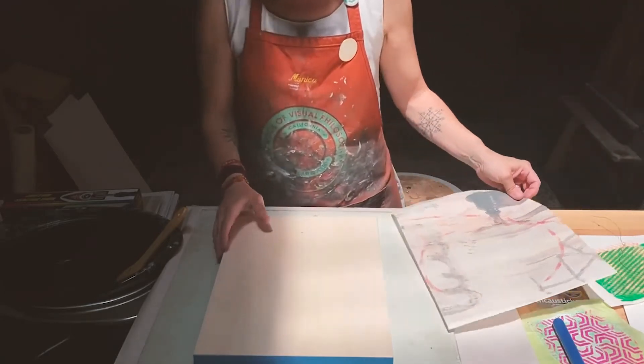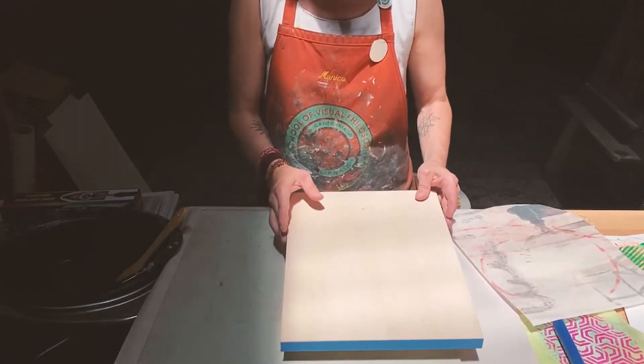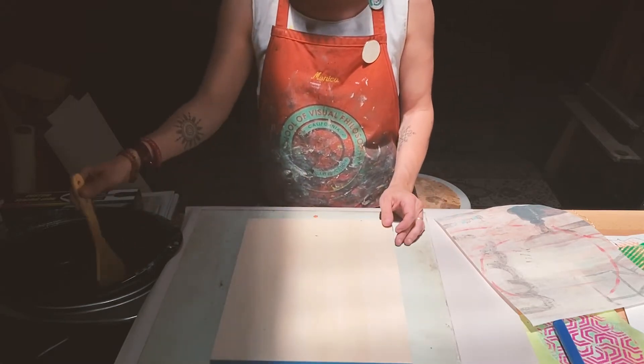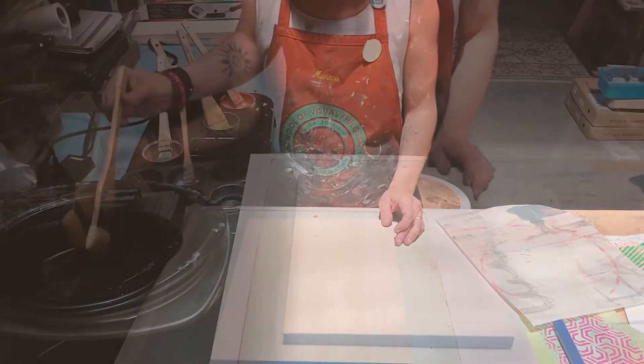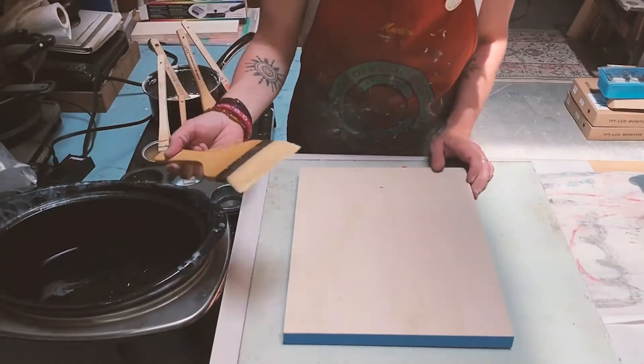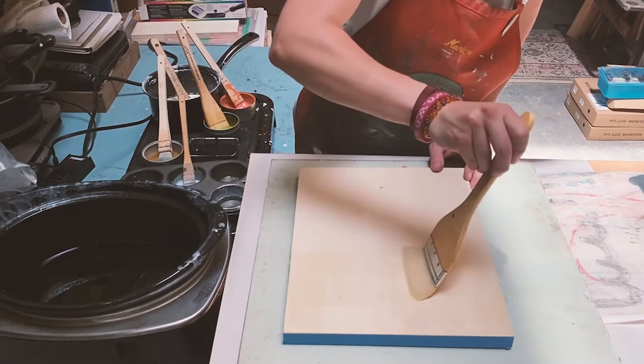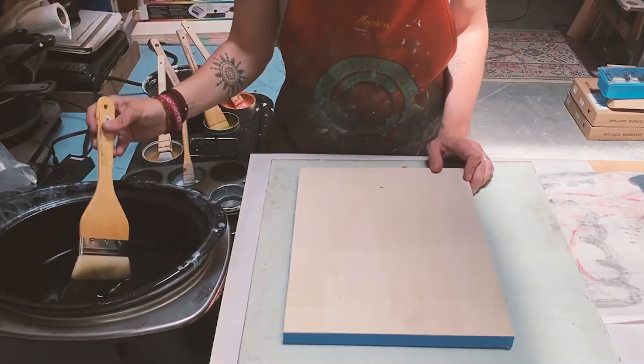First step is I am going to coat my painting or this panel with the encaustic medium, the clear medium. And it is bright. Let's see what I am doing. Let's begin!